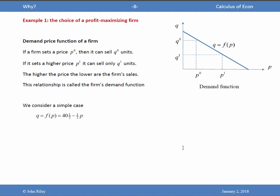The first one is the choice of a profit maximizing firm. The firm is producing a single product. So if the firm sets a relatively low price, P0, it can sell a lot. Demand is high.